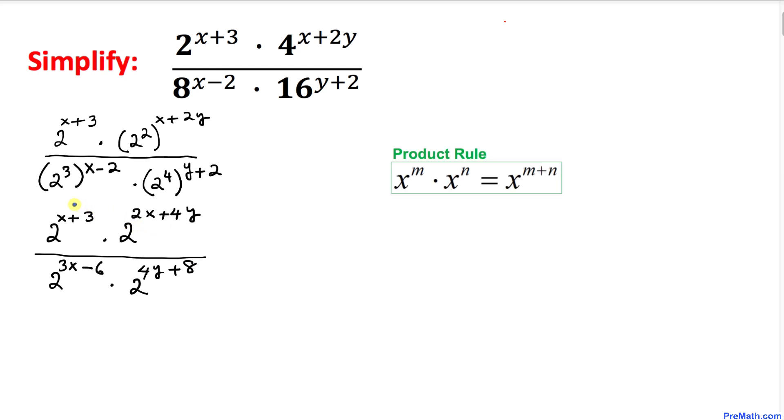Now let's multiply the numerator. Since we have the same base, 2 and 2, by using the product rule we add the exponents. So the numerator becomes 2^(x+3+2x+4y).